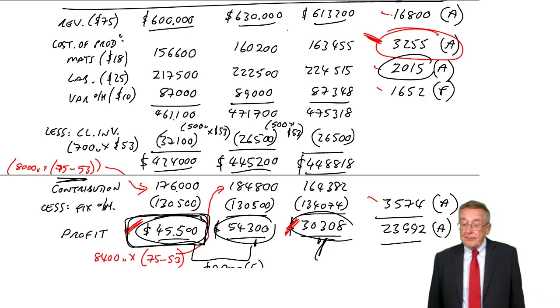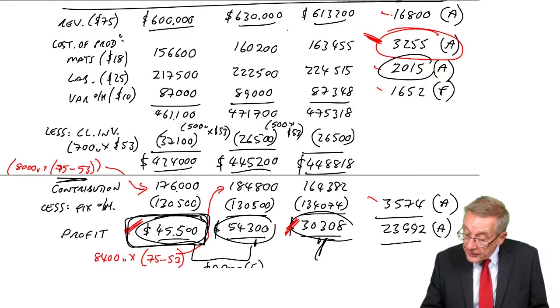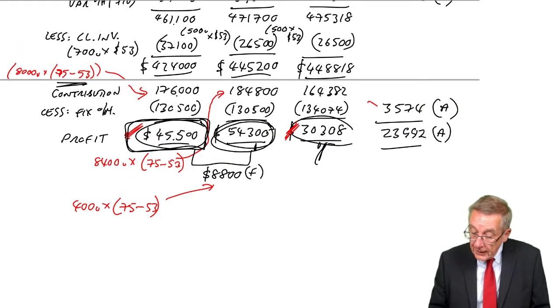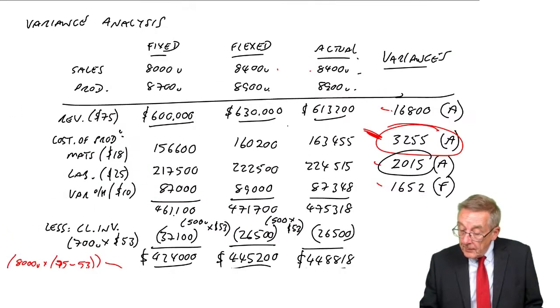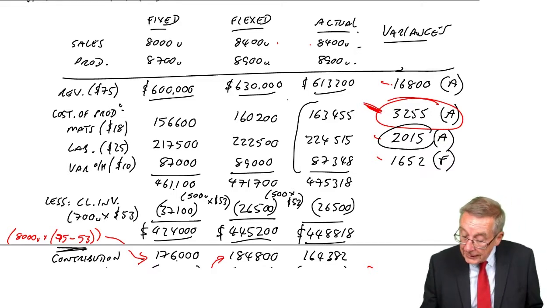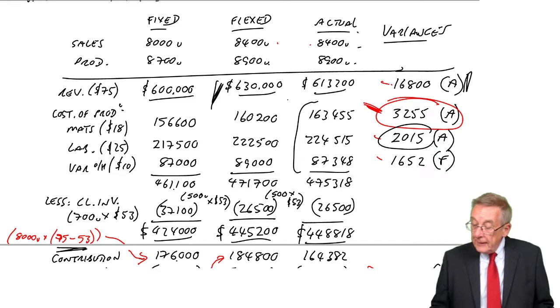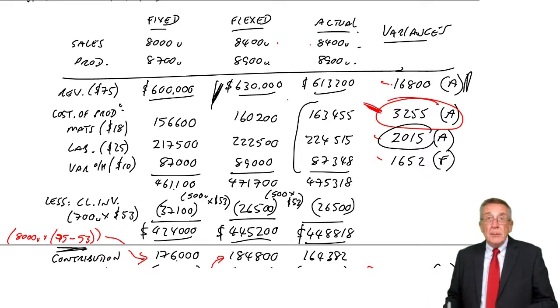I did say in the first lecture that the most obvious reason is that we sold more units, and selling more units, that alone would have given us more profit. It would have given us £54,300. And why didn't we make £54,300? Well, partly because of those cost variances which we've just been looking at.